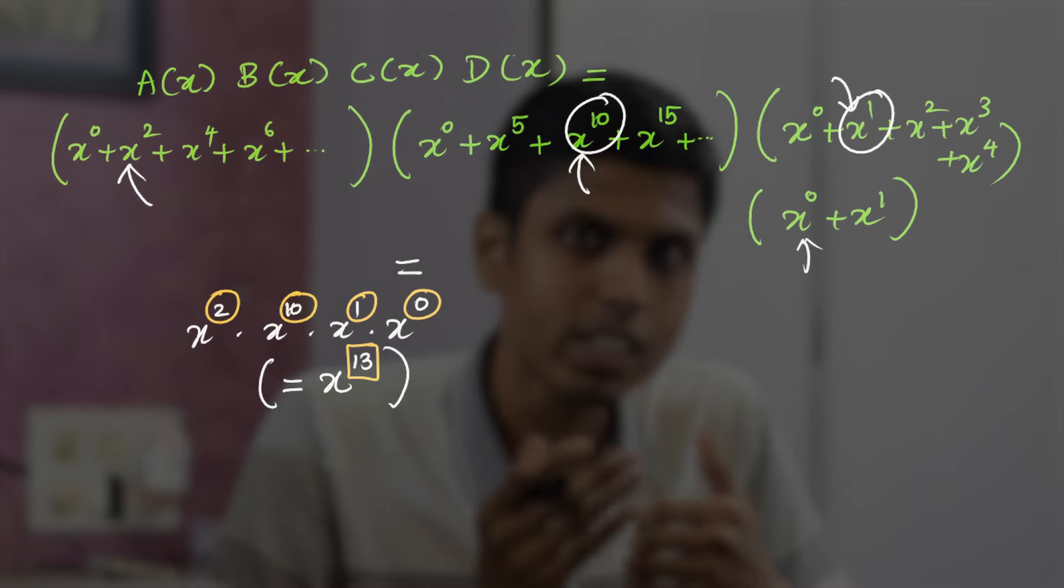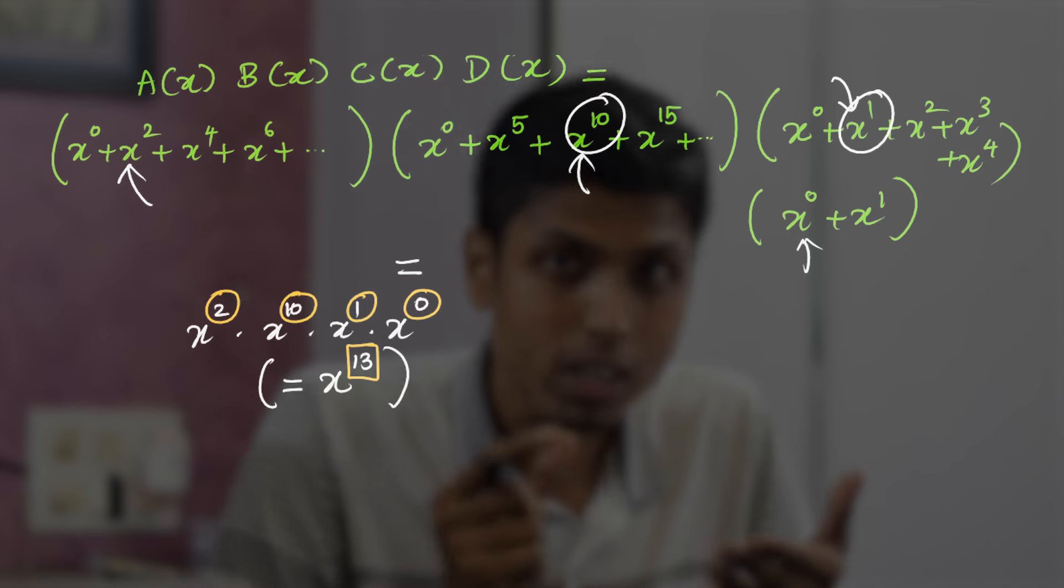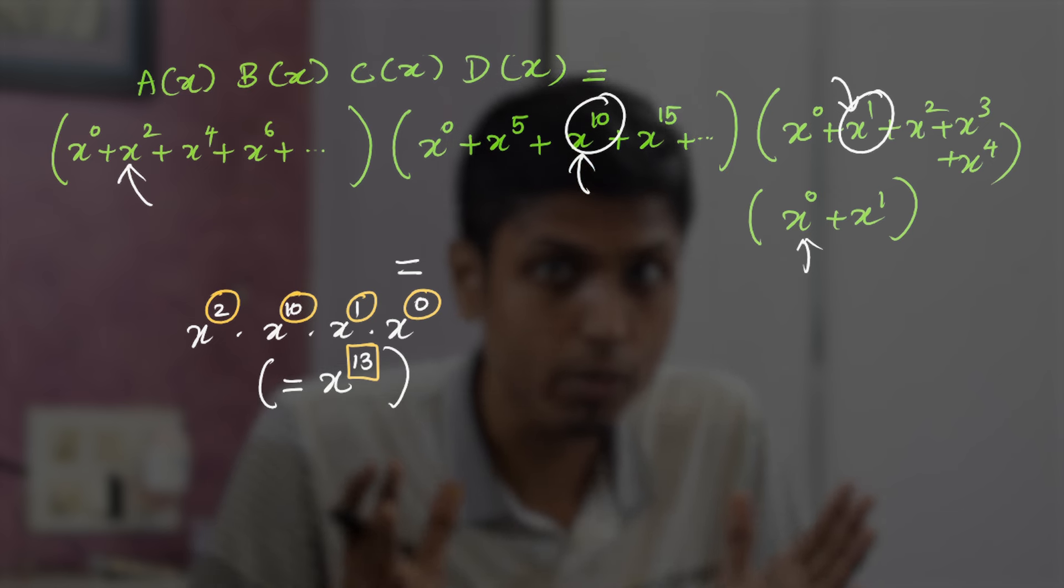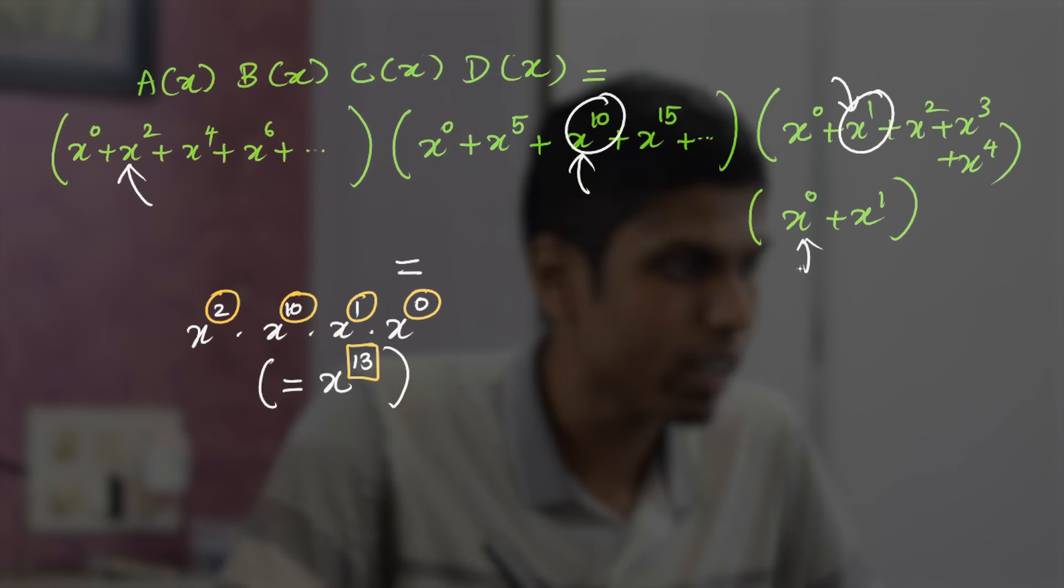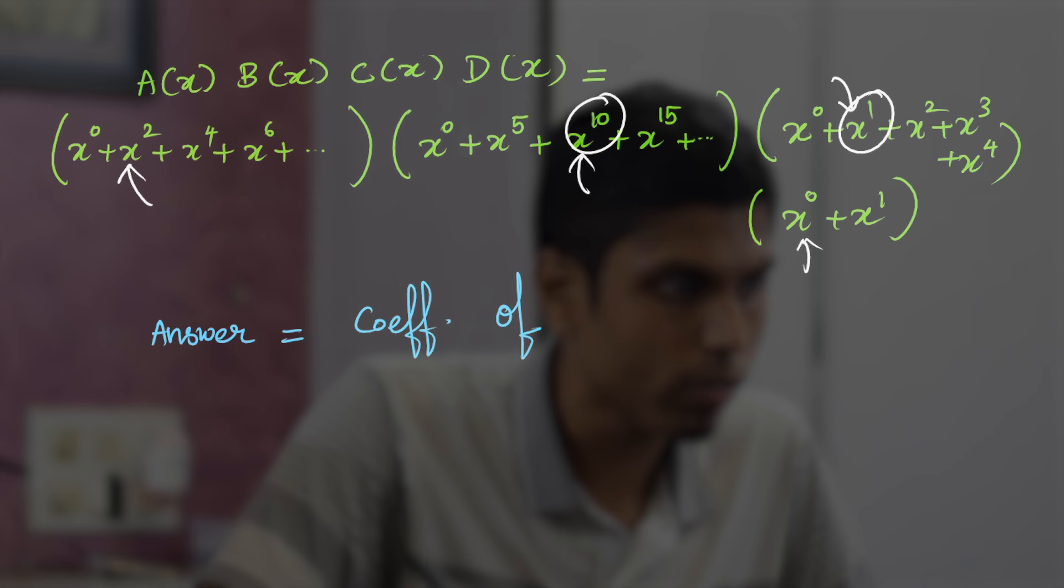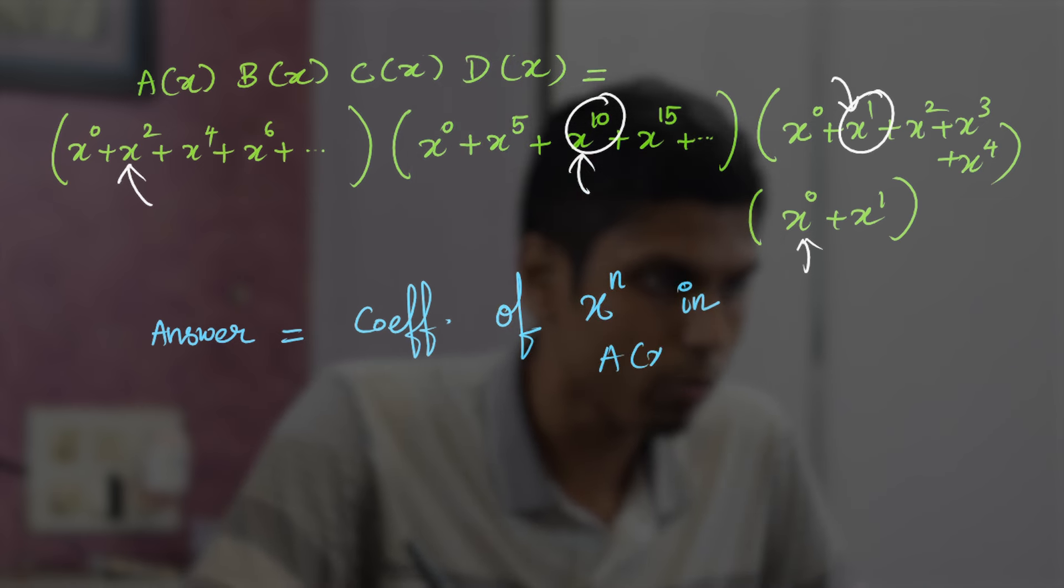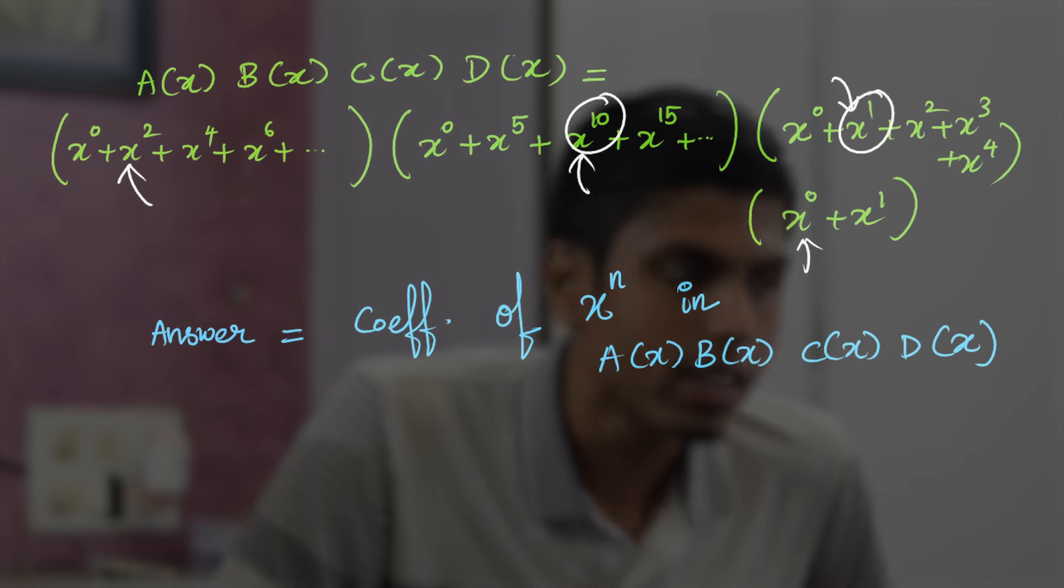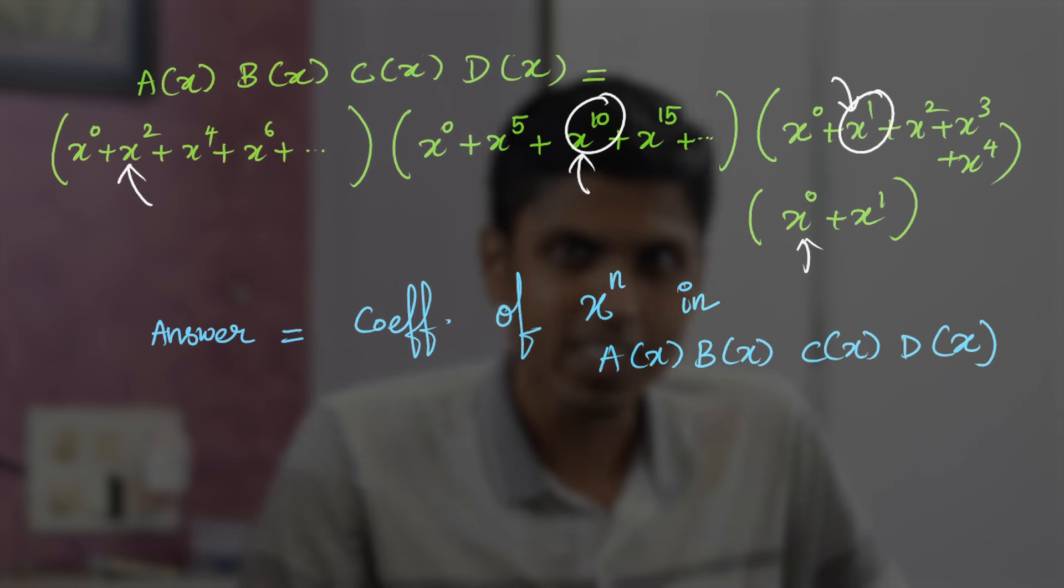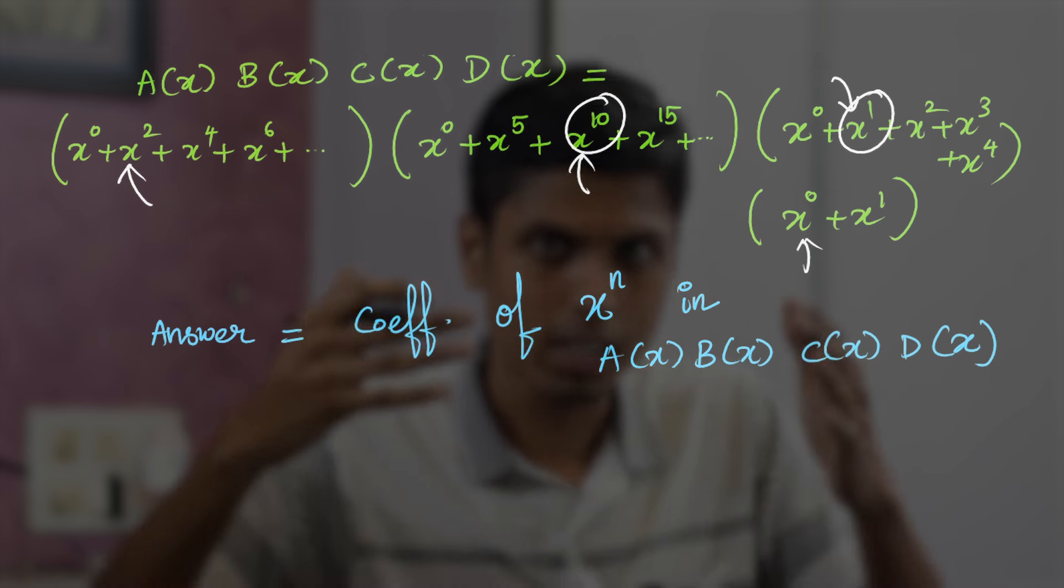So ultimately, I just need to see the number of terms whose exponent is 13, or the coefficient of x^13 in simplified form. This is if n equals 13. And if you go for a general n, I can just say that my answer is the coefficient of x^n in the product term A(x) · B(x) · C(x) · D(x). And that is an interesting meeting point of algebra and combinatorics.